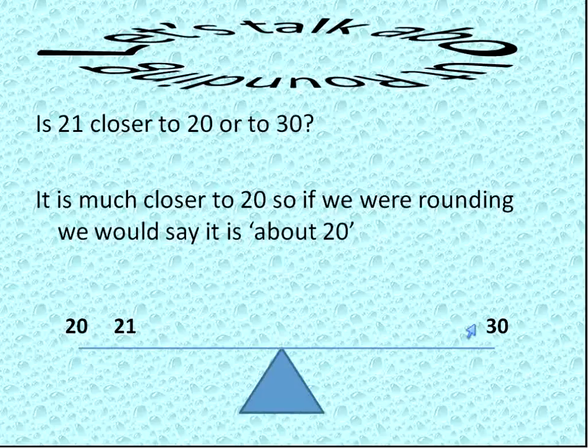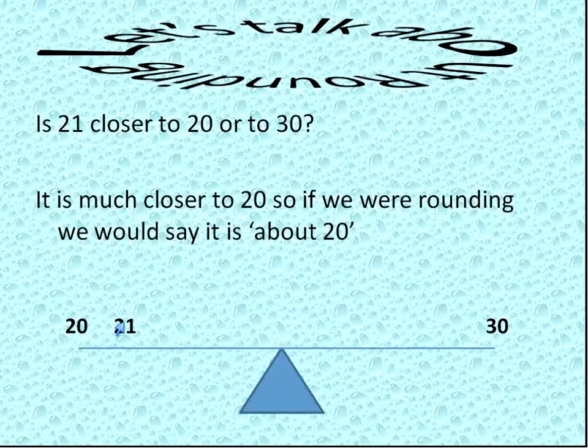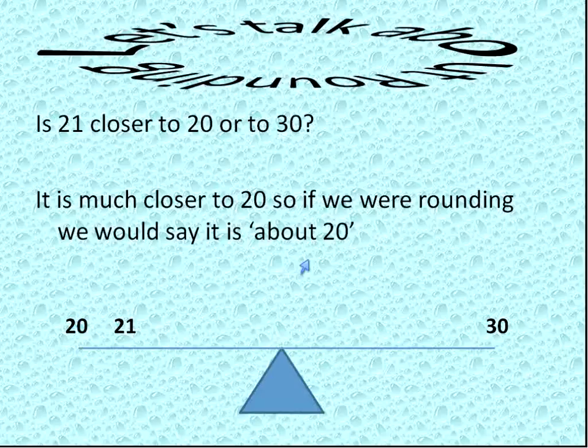If it were over here like 29, then that would be closer to 30, so we'd say it's about 30. But with this one, 21, we say it's about 20. We know that 21 falls between 20 and 30, and so we can pick the closer number.